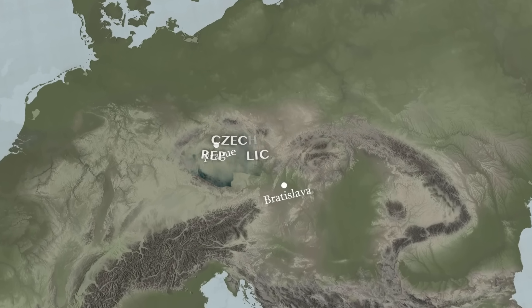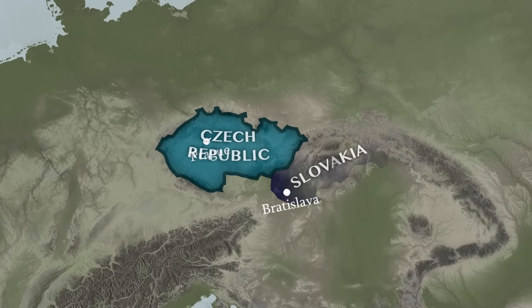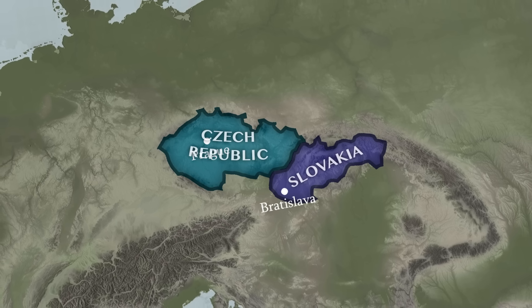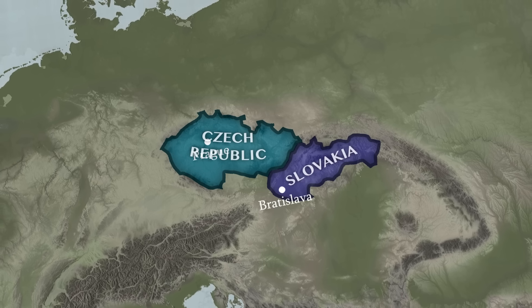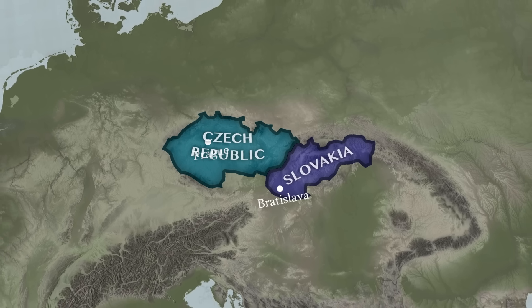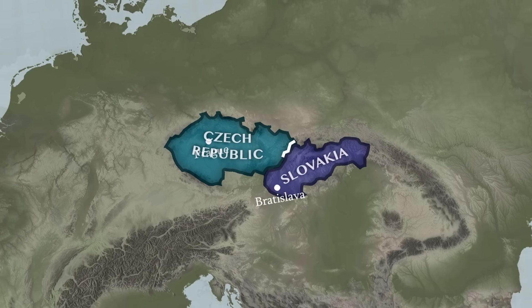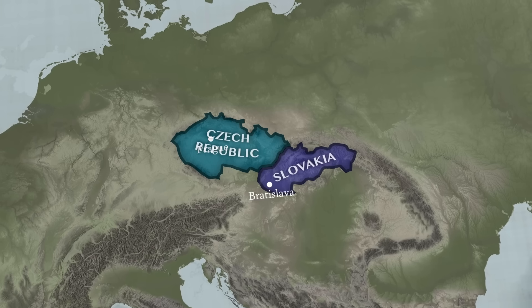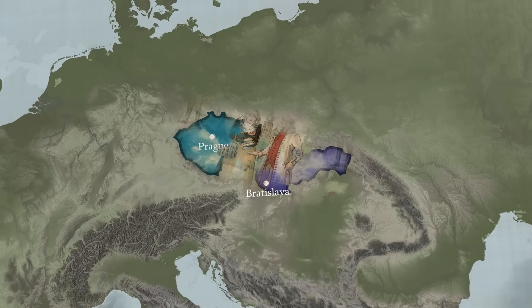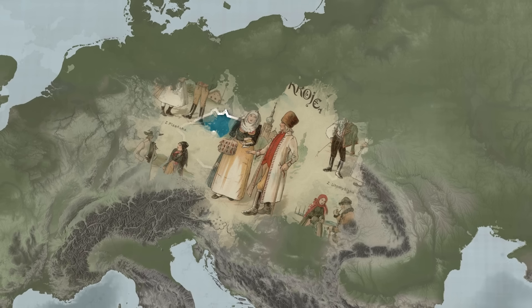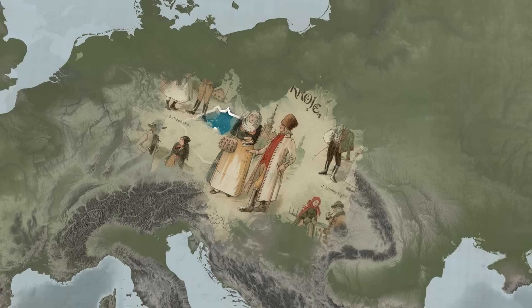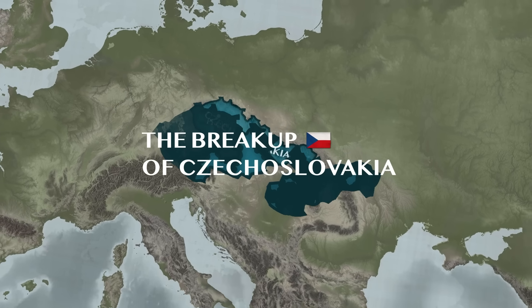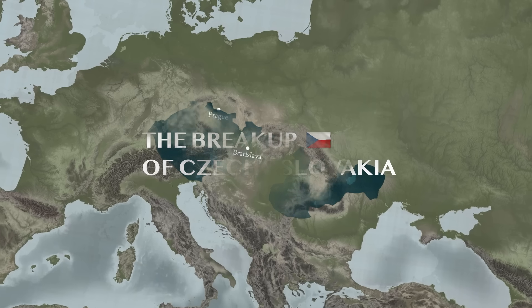Czechoslovakia, the Czech Republic, and Slovakia. For many who are far distant from these nations, it's not always clear what the difference between the three is or when each came to be. Once divided, temporarily united, then divided once more, and still to this day, the Czech and Slovak people remain brotherly Slavic nations with strong ties and similar cultures. But if that's the case, then what exactly happened? Why did Czechoslovakia fall apart?